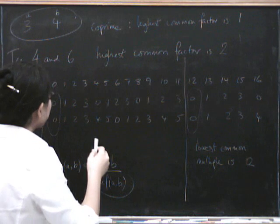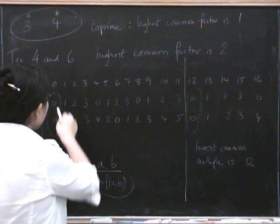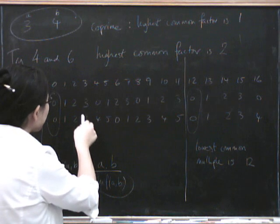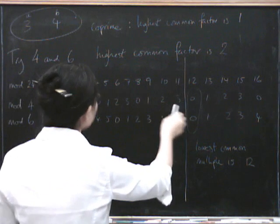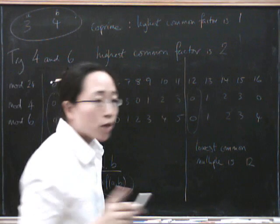So here we hit it halfway through the pattern because the highest common factor was 2. So in this case, it means that your pairs of numbers mod 4 and mod 6 pin you down not just mod 24, but they actually pin you down mod 12.